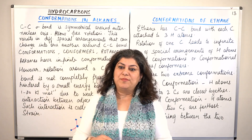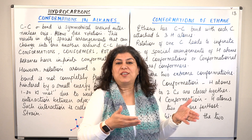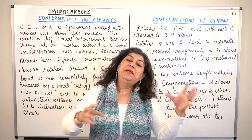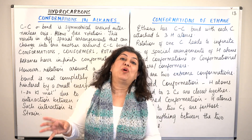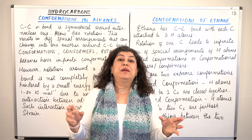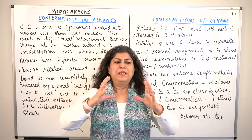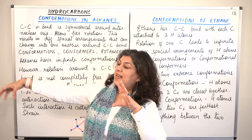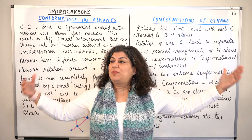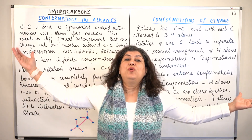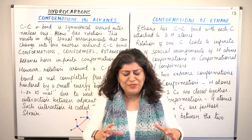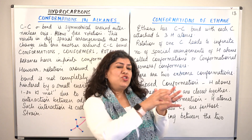Then comes functional group isomerism, where the arrangement of bonding is such that the functional group itself changes. For example, ketones and aldehydes can change into each other simply by the difference in the way that oxygen has bonded. The fourth category is metamerism, where there is a functional group in the middle and the number of carbon atoms on either side differs — that is metamerism. So all of these are structural isomers, based on the difference in bonding.